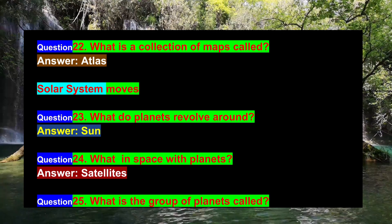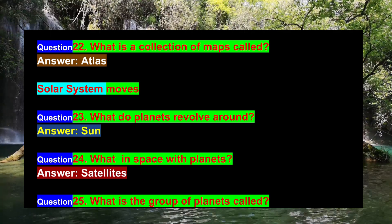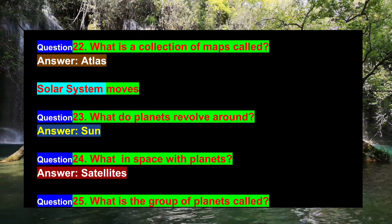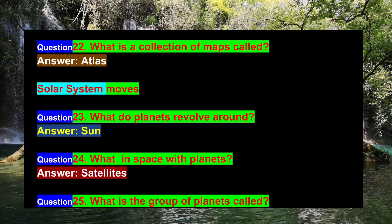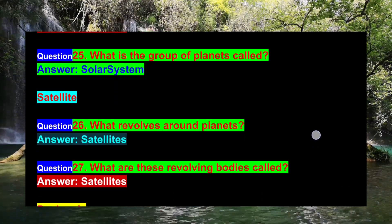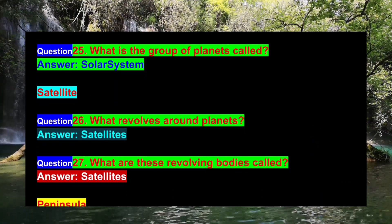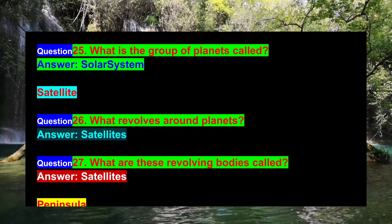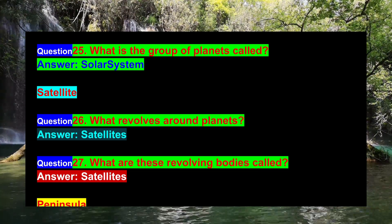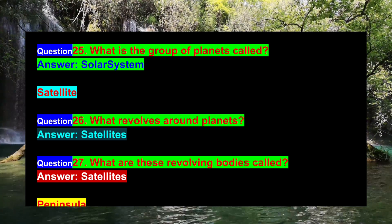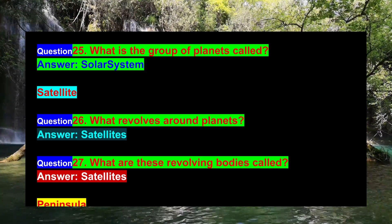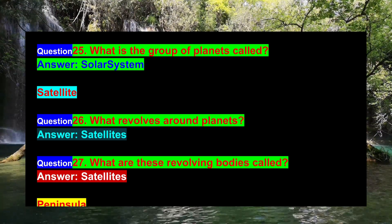Question 23: What do planets revolve around? Answer: Sun. Question 24: What exists in space with planets? Answer: Satellites. Question 25: What is the group of planets called? Answer: Solar System. Question 26: What revolves around planets? Answer: Satellites.